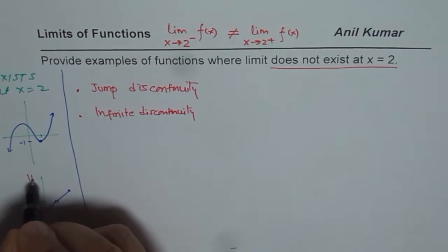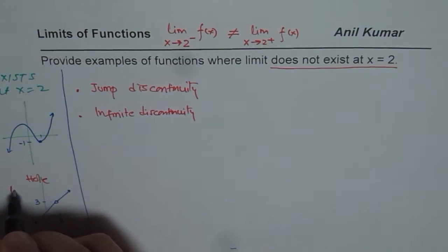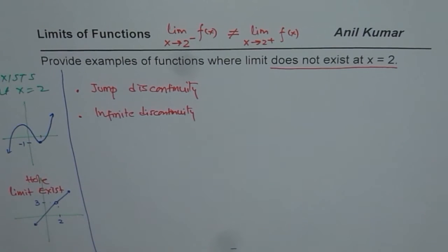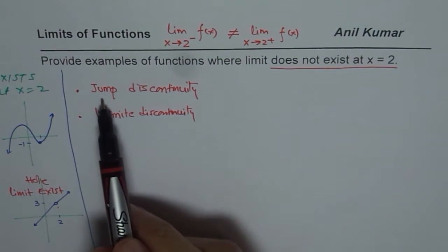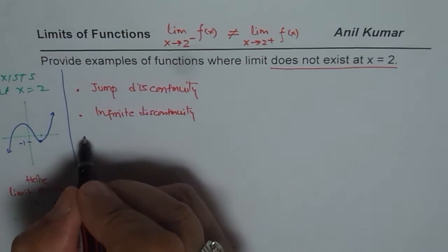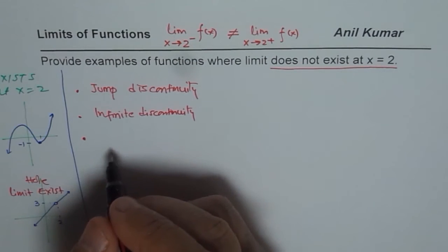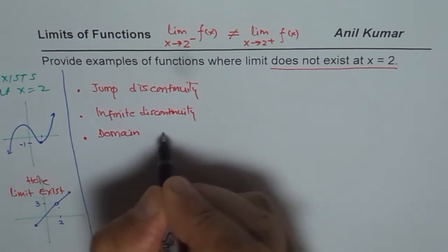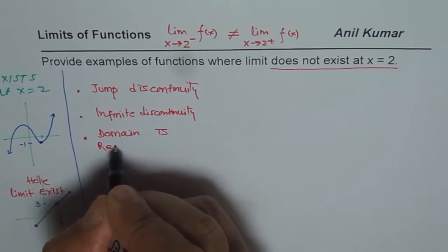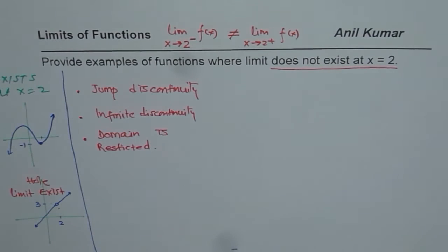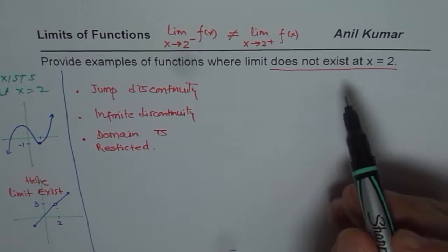If there is a hole, then limit exists. But if you have jump discontinuity or infinite discontinuity, then the limit does not exist. And the third kind of examples are those where the domain is restricted. So these are the three types of examples which we can take for this particular case.